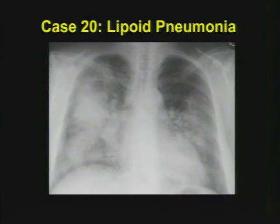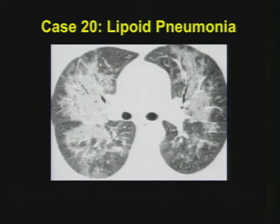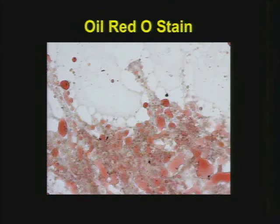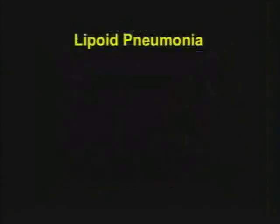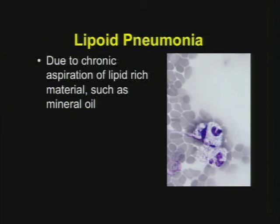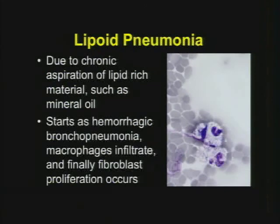Case number twenty: a patient from a local convalescent hospital being administered mineral oil for a bowel regimen who was also aspirating frequently — this is lipoid pneumonia. Chronic consolidation; lipoid pneumonia is in your differential in the right clinical setting. It doesn't have to be fat density — it can be a very nonspecific, confluent area of opacification. On a pathologic standpoint, these can be very hemorrhagic. When you lavage someone, they need special stains to look for the presence of mineral oil or other lipids — the oil red O stain. Chronic aspiration of lipid-rich material — mineral oil, mineral spirits, Vicks VapoRub — starts as a hemorrhagic bronchopneumonia and can evolve to a fibroinflammatory abnormality with extensive scarring.